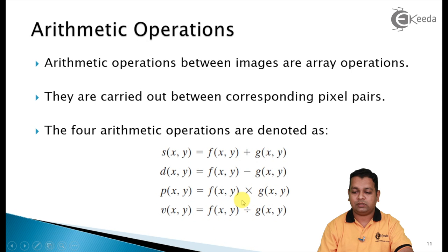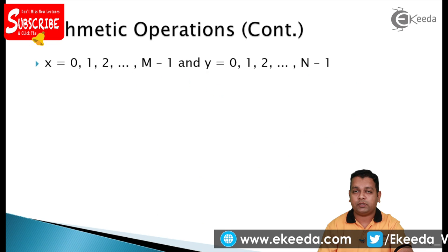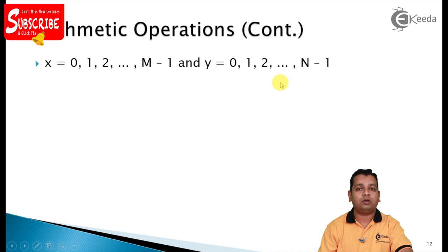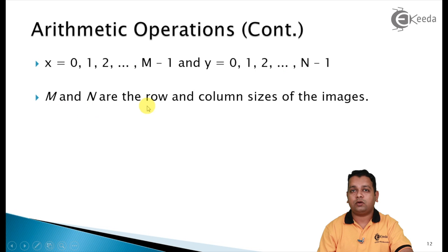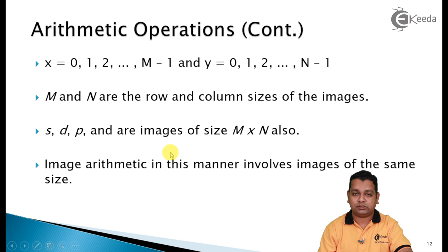The dimensions x and y are discrete, where x ranges from 0 to M-1 and y ranges from 0 to N-1. M and N are the rows and column sizes of the image, and their product gives the resolution of the image. The resultants S, D, P, and V are images of the same size M by N as the input images. Hence, image arithmetic involves images of the same size — that is the important condition to carry out these arithmetic operations.